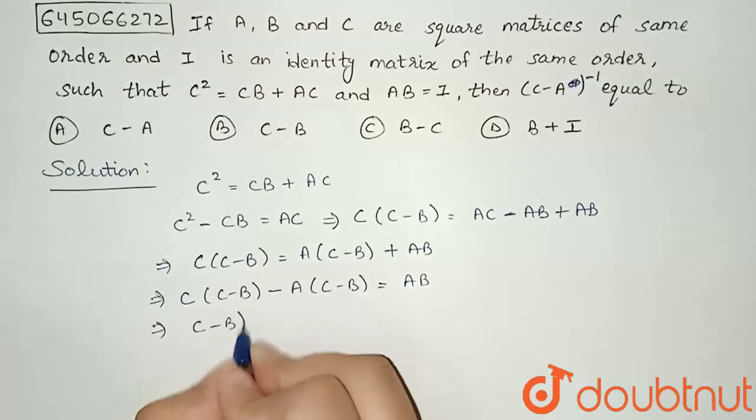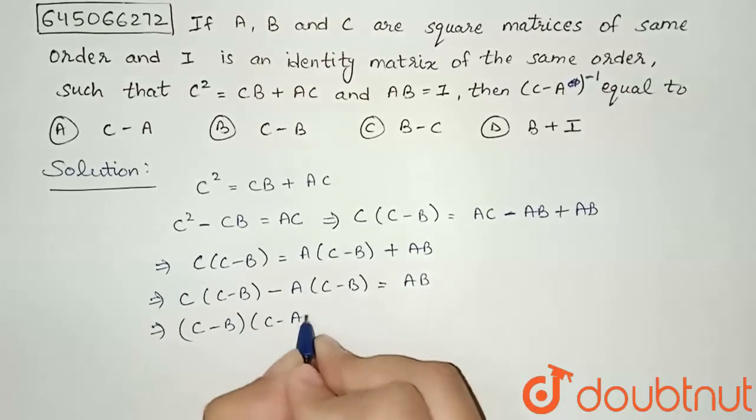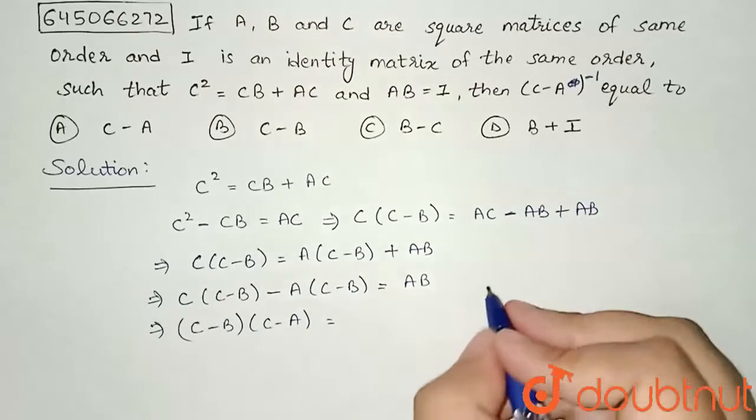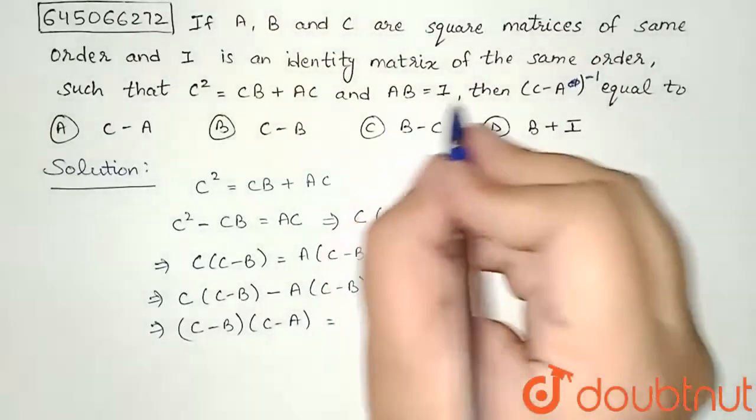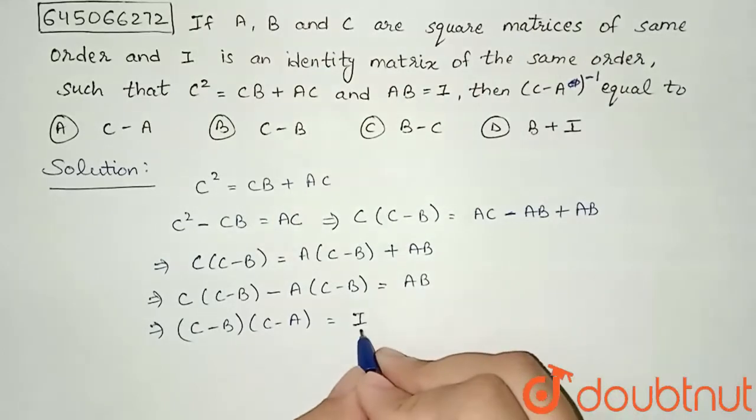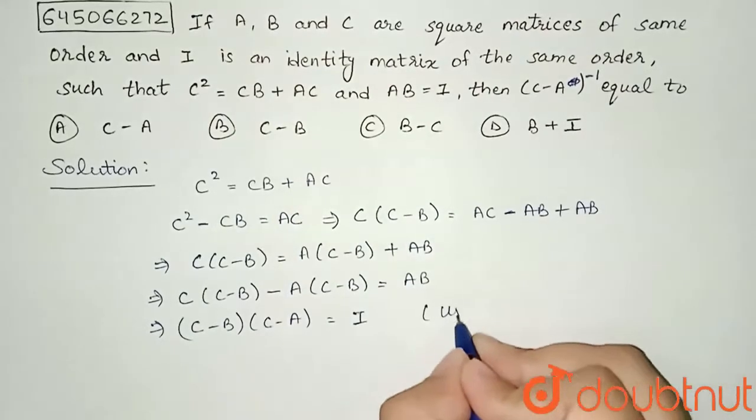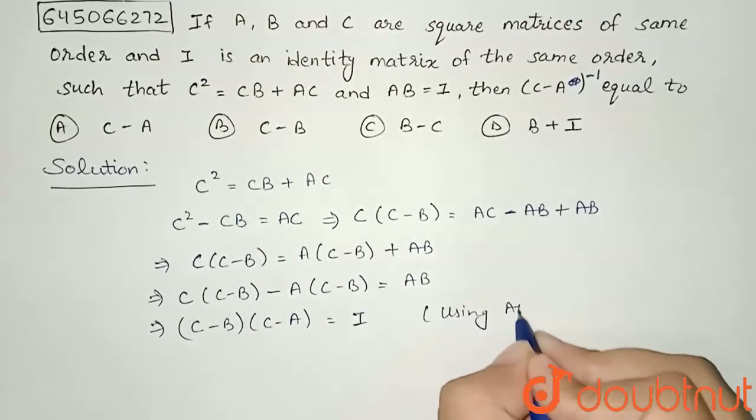So I can write (C - B)(C - A) = AB. And we are given here AB = I, so instead of AB I will write I.